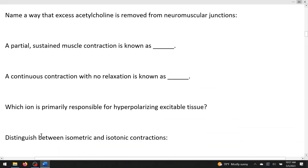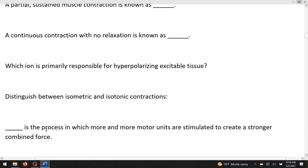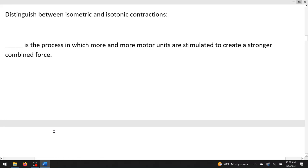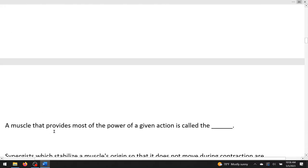Distinguish between isometric and isotonic. Isometric there is no shortening of the muscle and isotonic there is shortening. That's probably the easiest way to remember that. Blank is the process in which more and more motor units are stimulated to create a stronger combined force. This is called recruitment as it makes sense. We're going to recruit more guys to do more work. A muscle that provides most of the power of a given action is called the, well, there's a couple instances here. You could say agonist, that would work fine. Or you could say PM or prime mover. Both of those would be correct in my book.